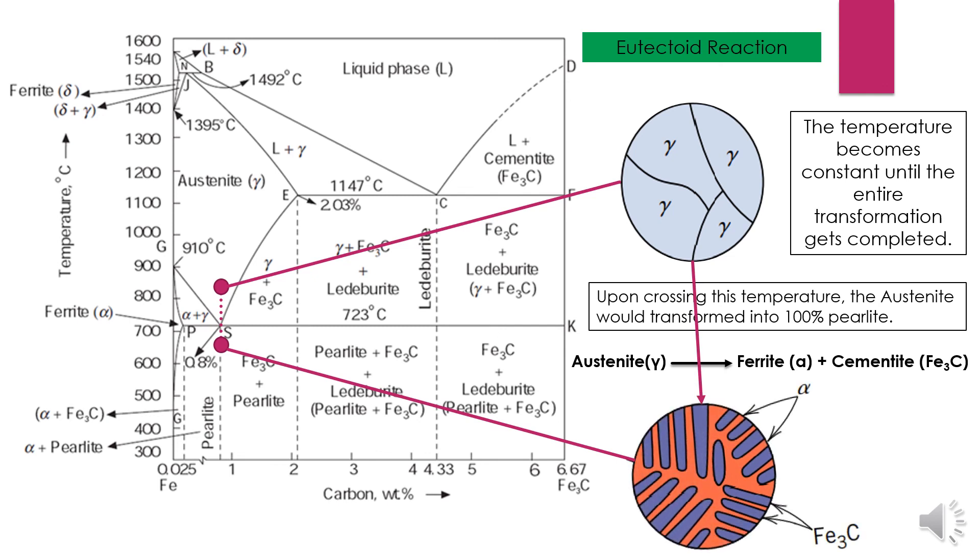So just below this temperature we have 100 percent pearlite, which is actually the mixture of ferrite and cementite.